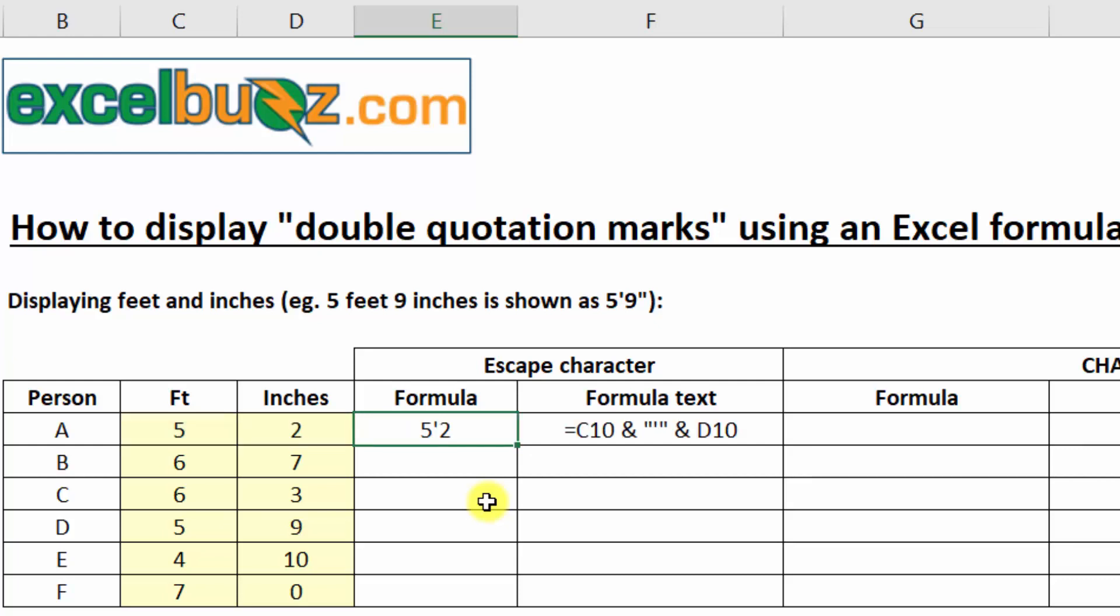There we can see five foot two. But to add the double quotation mark at the end, there's a bit of a trick to it. So we'll add another ampersand, open the double quotation mark.